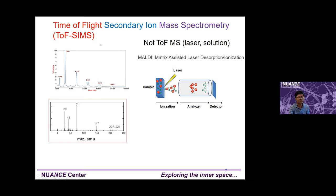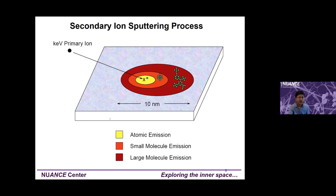MALDI-ToF is whole-material analysis; ToF-SIMS is just surface analysis. The next slide shows a schematic: when the primary ion strikes the sample, the center area mostly yields atomic or elemental ion information, and from the surrounding area you get small molecules. These are fragments. From the center, due to the strong energy, you get atoms. As you move outward and the damage is less, you can get larger intact fragments.